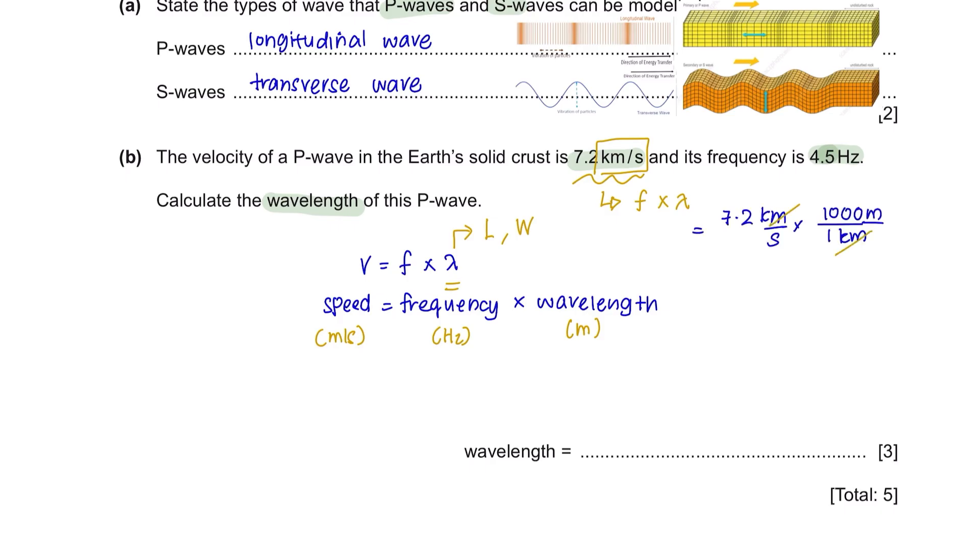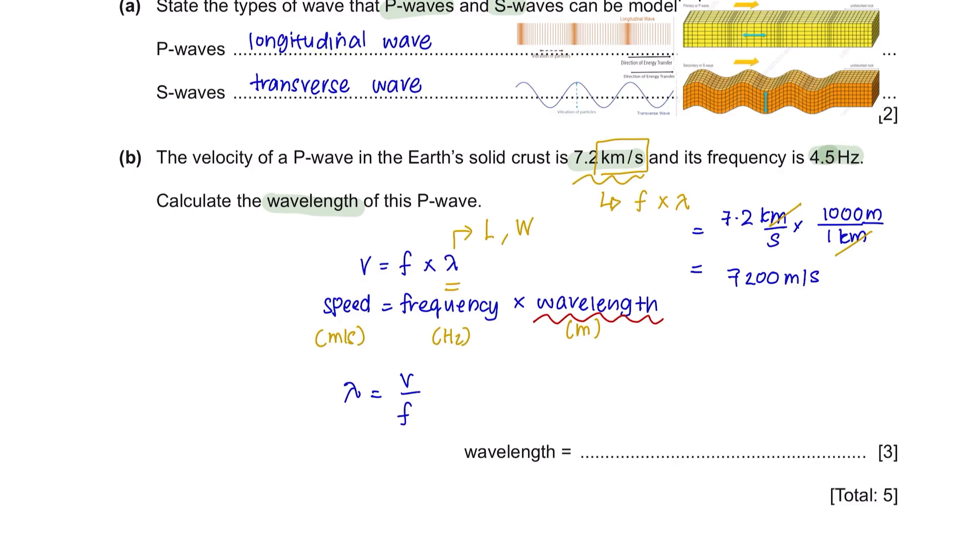Since the speed here is given in kilometers per second, we have to convert this to meters per second. One kilometer equals 1000 meters, so this gives us a value of speed in meters per second, which is 7200 meters per second. Now we can calculate the wavelength, which is speed divided by its frequency. Let's substitute all the values given. You will be getting a value of wavelength, which is 1600 meters.